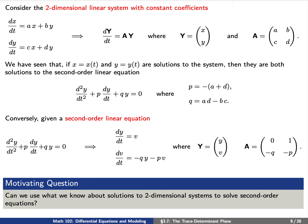We've seen that if X and Y are solutions to this system, then they are both solutions to a second-order linear equation: d²y/dt² plus a constant p times dy/dt plus another constant q times y equals 0. Conversely, given a second-order linear equation with constant coefficients, we can express this as a two-dimensional linear system with constant coefficients.